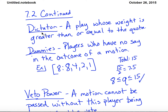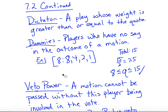There are also things called dummies. You don't need a dictator to have dummies — dummies can exist without a dictator. But if you have a dictator, you will always have dummies. A dummy is anyone who has no say in the outcome: that person voting or not voting will not change whether something passes. For example, with four players where player 1 has 8 votes, player 1 alone can make anything pass or block anything.